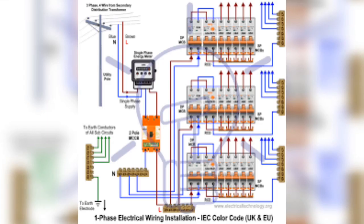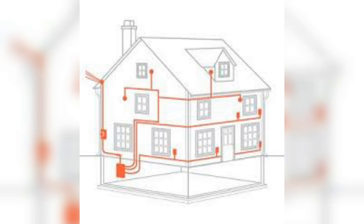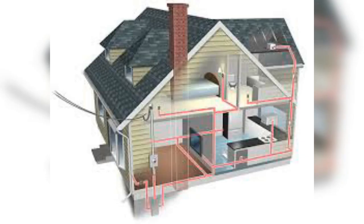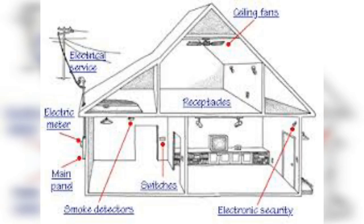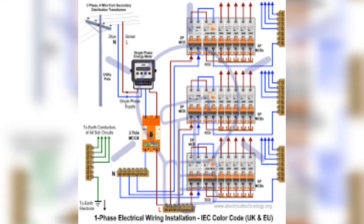It must be noted that bulb resistance is high and so the current is small. Fuses and wires used for lighting purposes are thinner than those used for heating appliances. The resistance of heating appliances is low and so the current drawn is comparatively high.